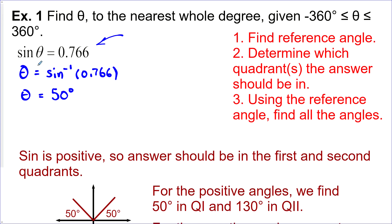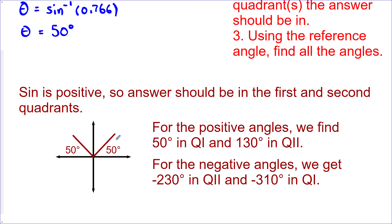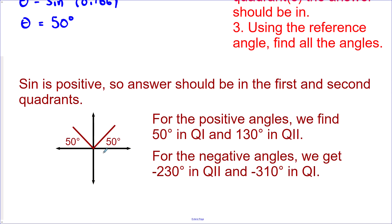Sine's ratio is positive, so the answer could be in the first or second quadrant, because sine represents the y-value of the coordinate, which is positive in quadrants one and two. We have a reference angle of 50° in both quadrants. For positive angles from 0° to 360°, one solution is 50° and the other is 180° − 50° = 130°.